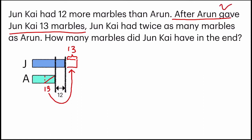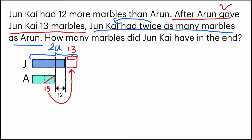Now the second part: Jinkai now had twice as many marbles as Arun. Since Jinkai had twice, which means two units, the entire thing all the way here is equal to two units.